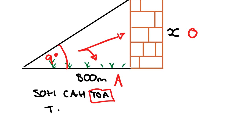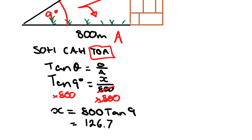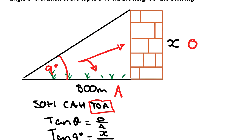So tan θ equals O over A. We have tan 9, because at this point we're just substituting, equals my opposite, so x over 800. We multiply the 800 up, they cancel out, and we're left with x equals 800 tan 9, which you can put in the calculator and you get 126.7 meters. So the building is 126.7 meters.